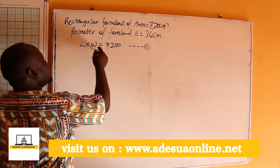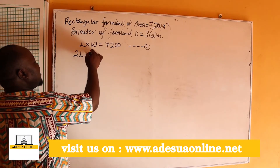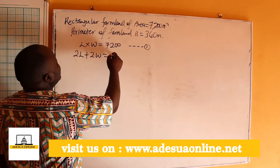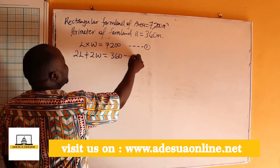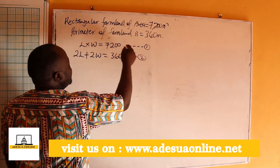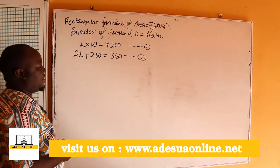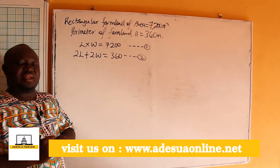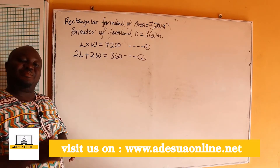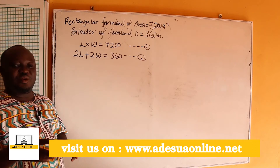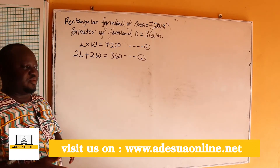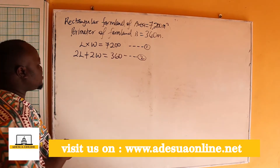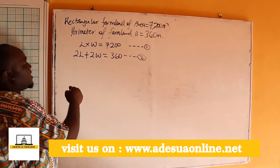The perimeter is 2L plus 2W equals 360 m. This is our equation 2. The perimeter of a rectangle is 2L plus 2W because we have length, length, width, width.